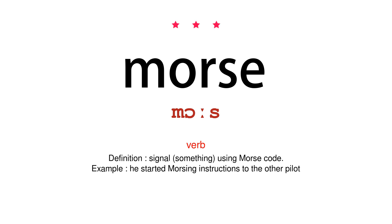Verb. Definition: signal something using Morse code. Example: he started Morsing instructions to the other pilot.